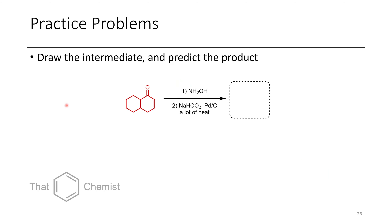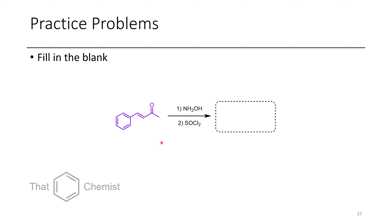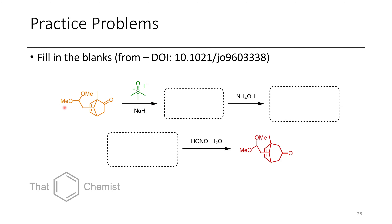For this lecture, I'd like to assign a few practice problems. First, show what would form if you treated this alpha-beta-unsaturated ketone with hydroxylamine, then heated it with palladium on carbon in the presence of sodium bicarbonate — and draw the intermediate. In the next problem, show what would form if you treat this with hydroxylamine and then thionyl chloride. In the final problem, we have a total synthesis multi-step synthesis where you fill in the blanks — this will test the chemistry we learned previously in our video about sulfonium ylids, which I'll include a card to. Hopefully this has been a useful video on Aza-Baeyer-Villiger type reactions. If you have any questions or comments, please leave them below, and it would really help the channel if you left a like and subscribed.